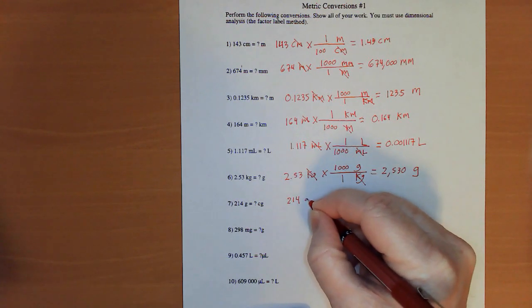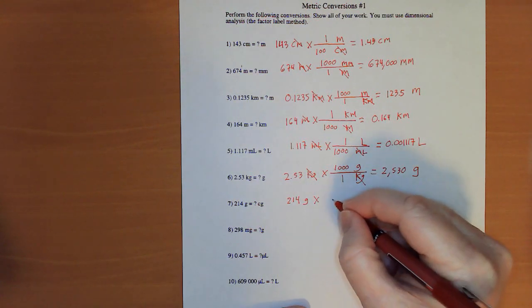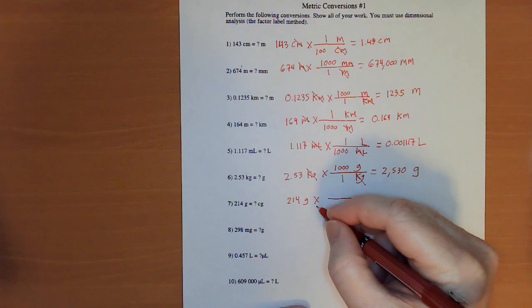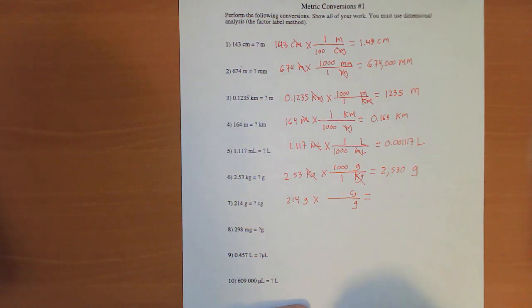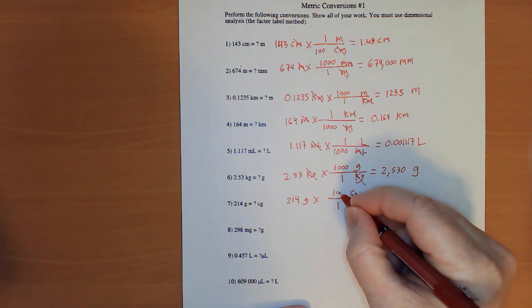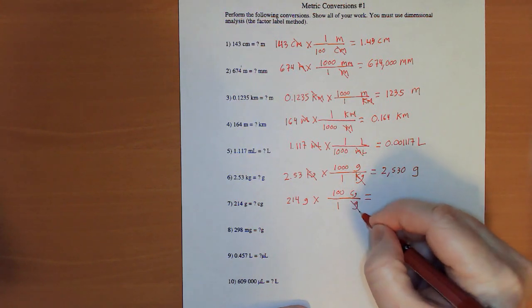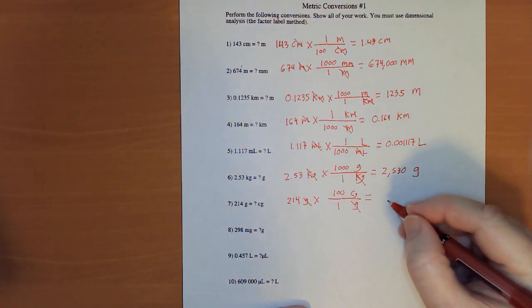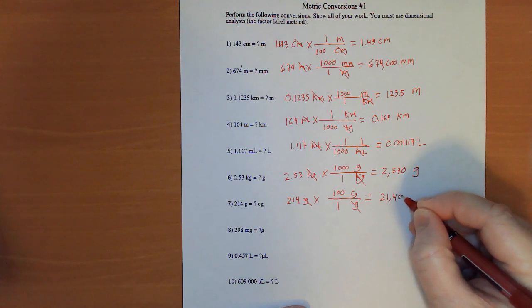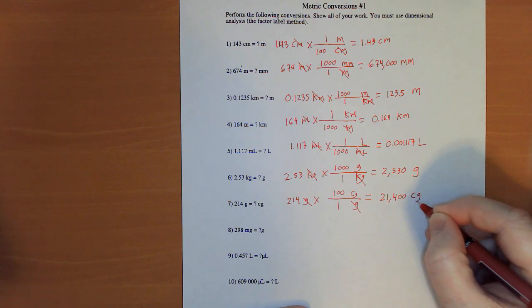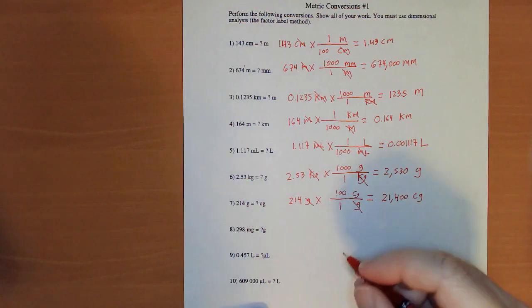Let's get 214 grams times. I want to get rid of grams and I want to get to centigrams. 1 gram has 100 centigrams the way that $1 has 100 cents. So, now I have 21,400 centigrams.